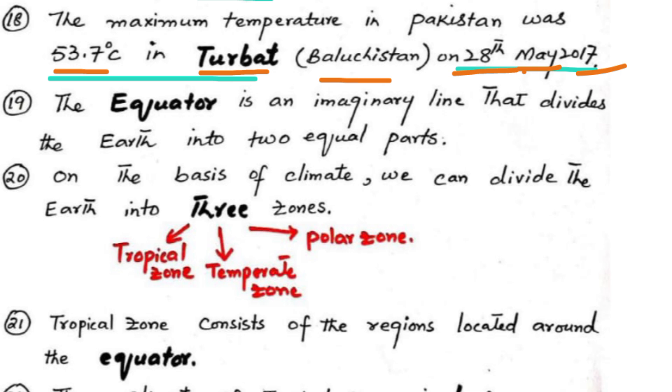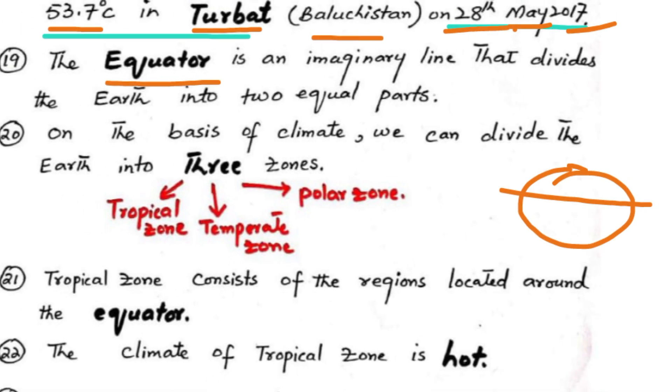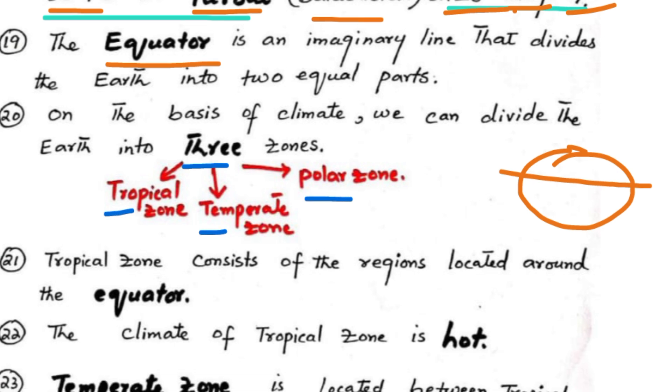The equator is an imaginary line that divides the Earth into two equal parts. On the basis of climate, we can divide the Earth into three zones: tropical zone, temperate zone, and polar zone.